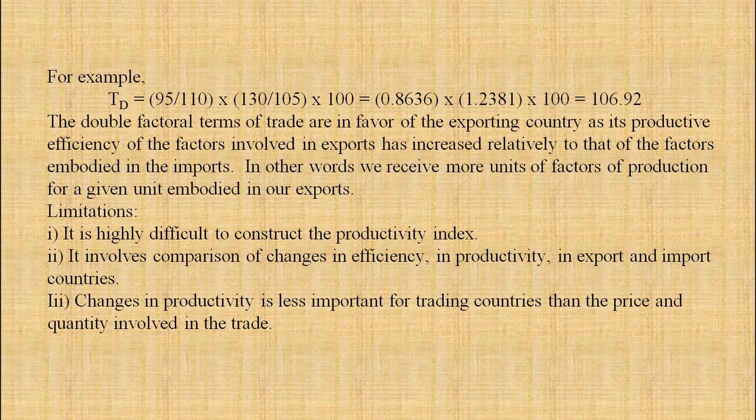We receive more units of factors of production for a given unit embodied in our exports. The limitations of double factorial terms of trade: it is highly difficult to construct the productivity index. Second, it involves comparison of changes in efficiency and productivity in export and import countries. Third, changes in productivity are less important for trading countries than the price and quantity involved in the trade.